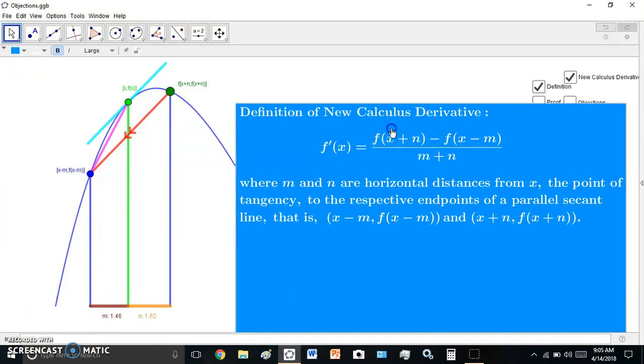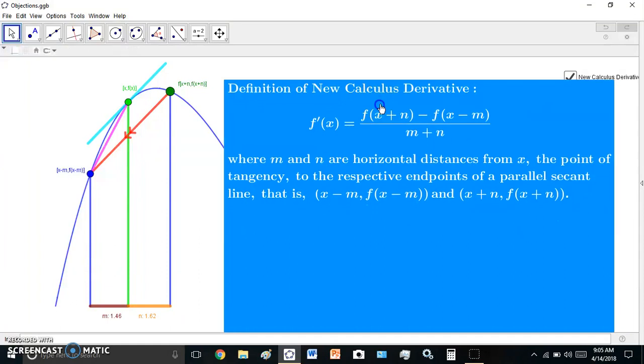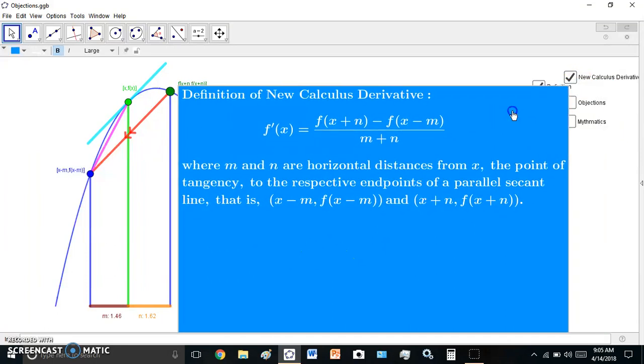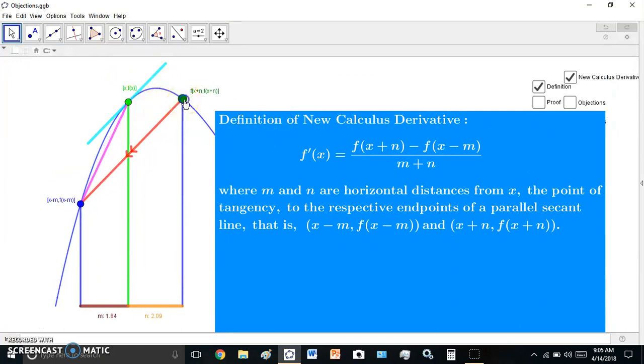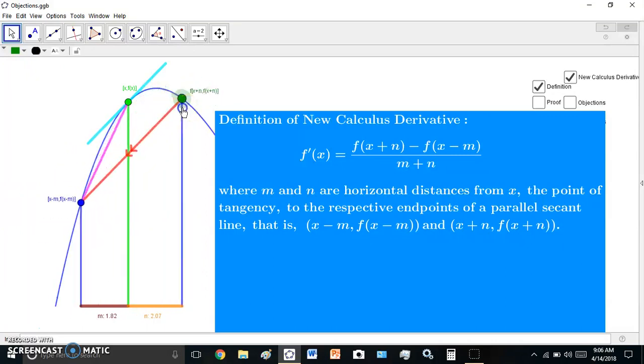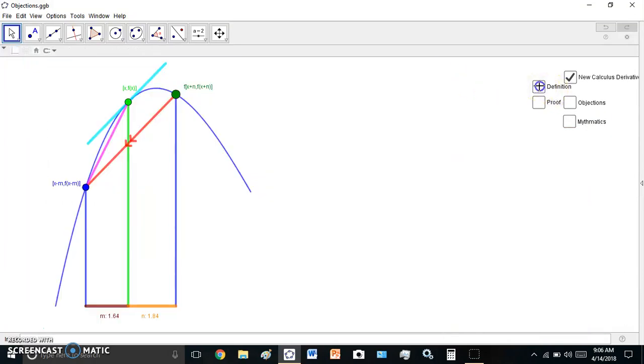You have to have them in this order in the definition. You can't make the silly mistakes that most academics make thinking that you can switch them around. That's not possible. They have a special relationship. This distance is related to this distance for every continuous and smooth curve in calculus. This slope is found by any of these many parallel secant lines, and nothing is approaching anything here.